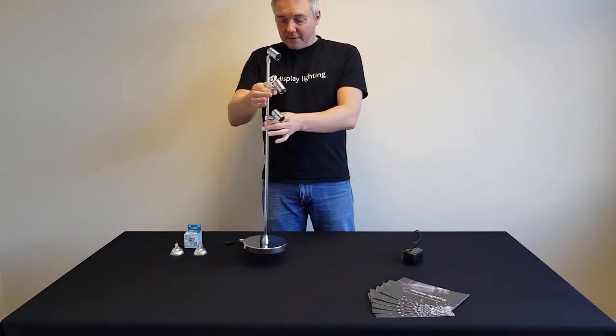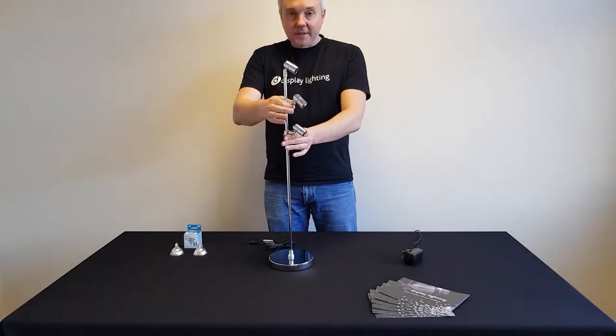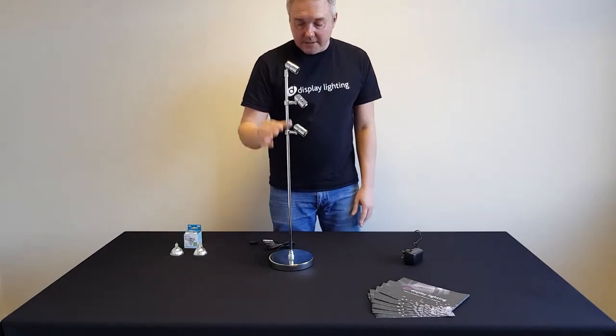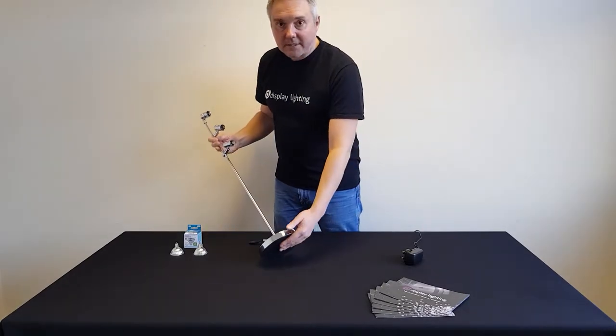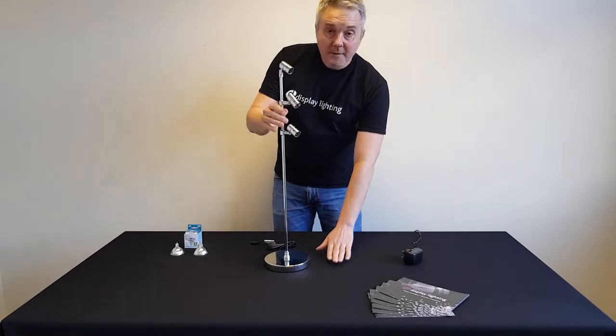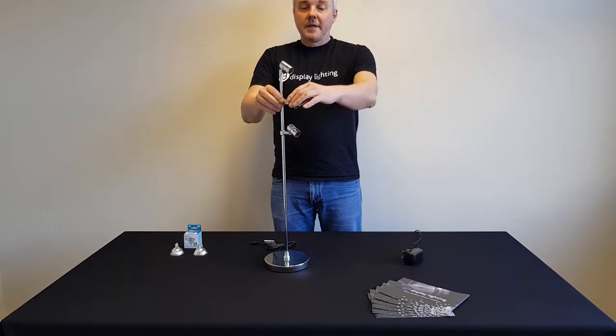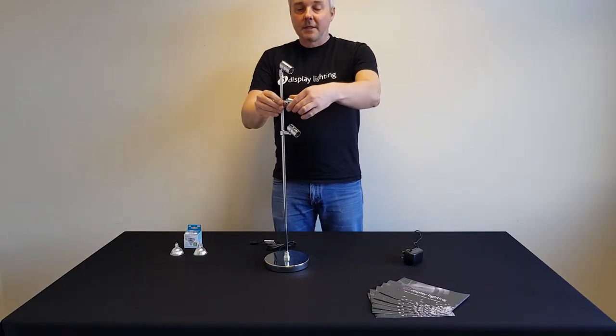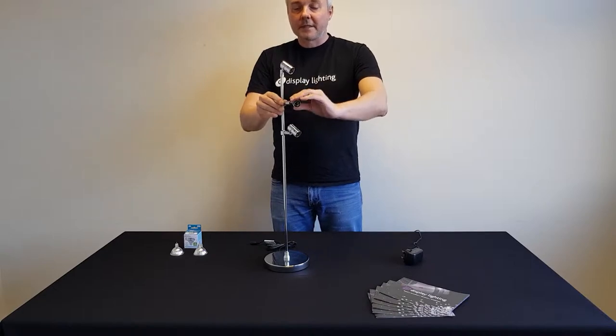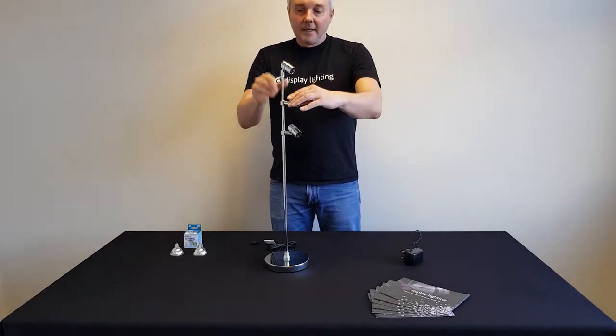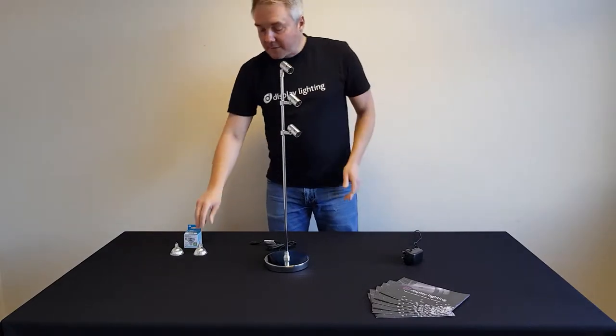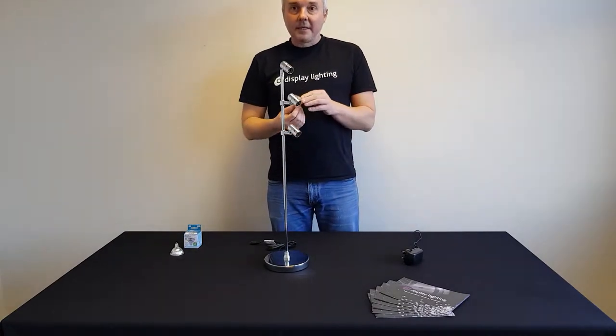The TSP3 is a freestanding spotlight constructed with a weighted base and a protective felt pad to protect the surface. It has three independently adjustable spotlights which can all rotate and tilt through 90 degrees. They're designed to accept MR16 LED lamps.